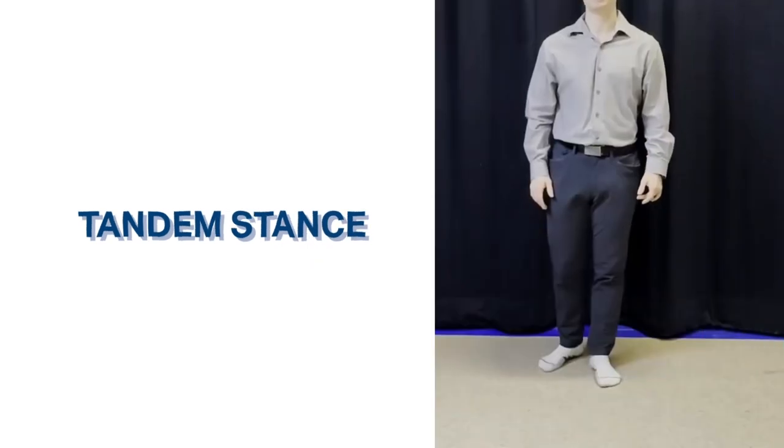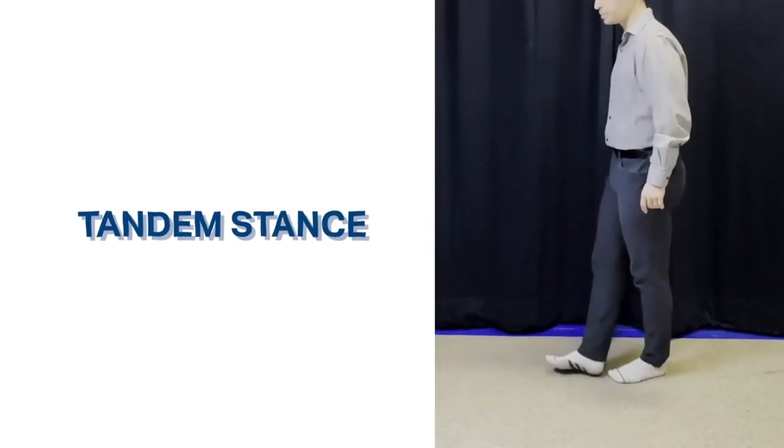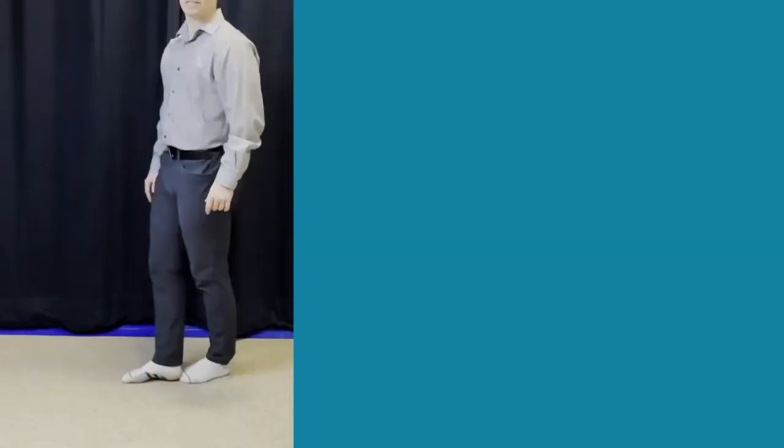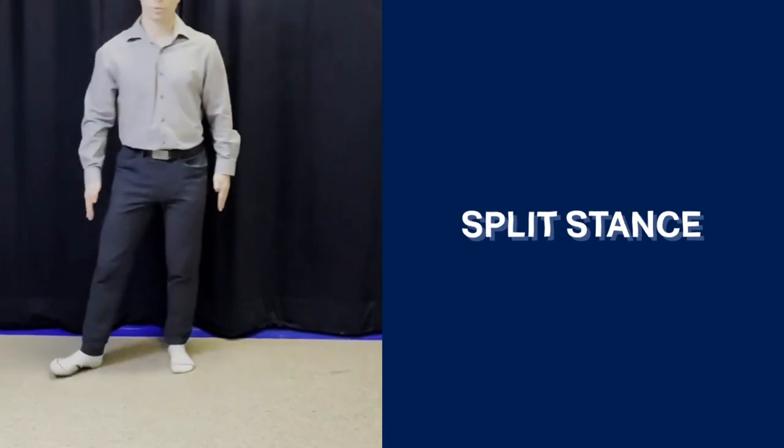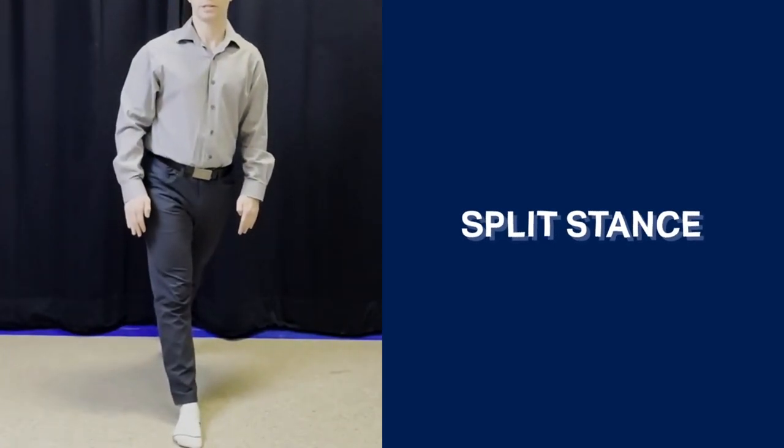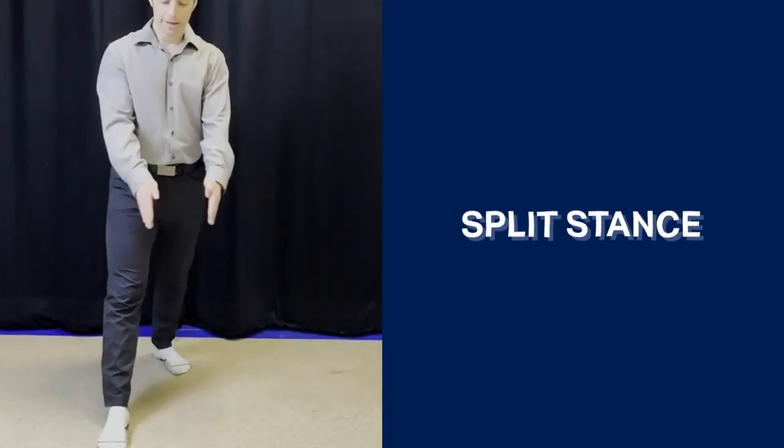What are the three different foot positions? Position one is something called a tandem stance, that is heel toe. From the side view, it looks like this. Split stance is one leg in front of the other in line. So in line is good, this is good, and then this is bad. You want to be in line. The third position is single leg stance. Those are your three foot positions.